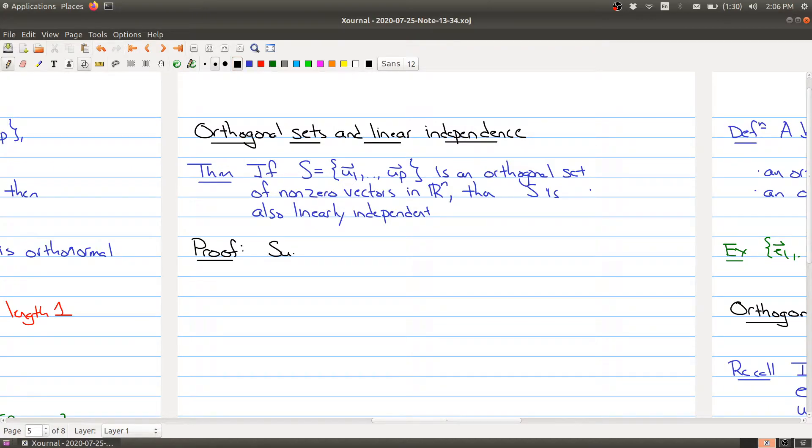And remember how to prove something is linearly independent. So suppose that you had a linear combination equaling to the zero vector. What's our goal is we want to show that all of these scalars is zero. So if we can show that all of these scalars are zero, then we have shown that all of these vectors are linearly independent.